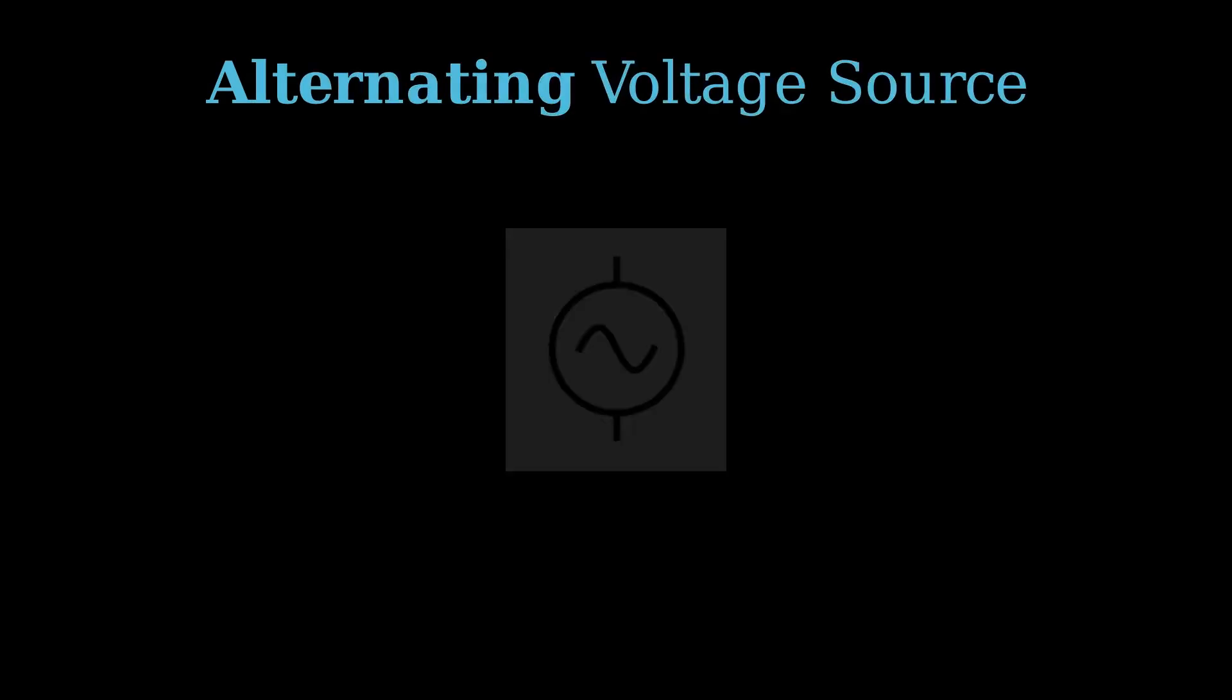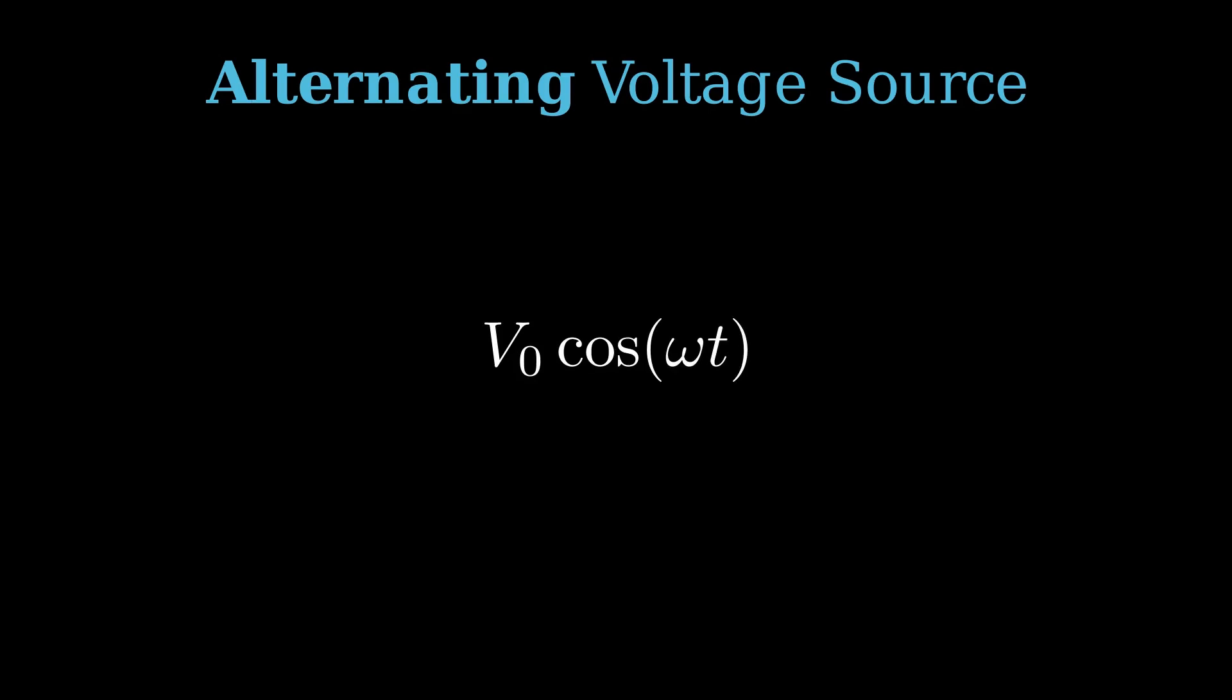All of this classification for complex numbers is great, but why do we care as electrical engineers? You may have seen this symbol on a circuit schematic. This is an AC voltage source.